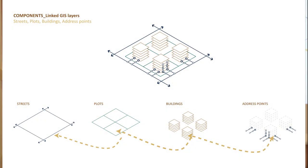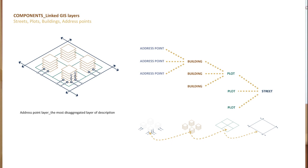What we do is build a GIS model — interlinked GIS layers of these different components. We also add the layer of the address points. The interlinking of these layers is very important because then you cannot only study and analyze each layer and each component individually, but also study their combined effect.